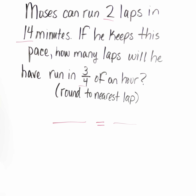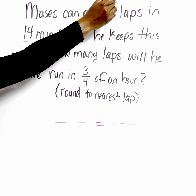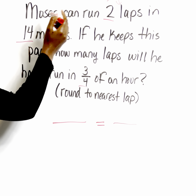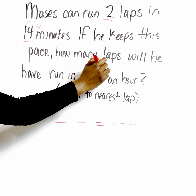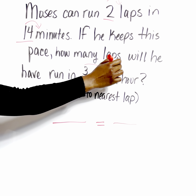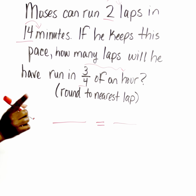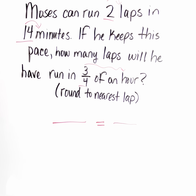So what are our values describing? Two is describing laps, 14 is describing minutes, and three-fourths is describing hours. So that lets me know initially that I'm dealing with different units and some type of conversion has to occur. So we're going to set up what we have first and then we'll do the conversion from there.